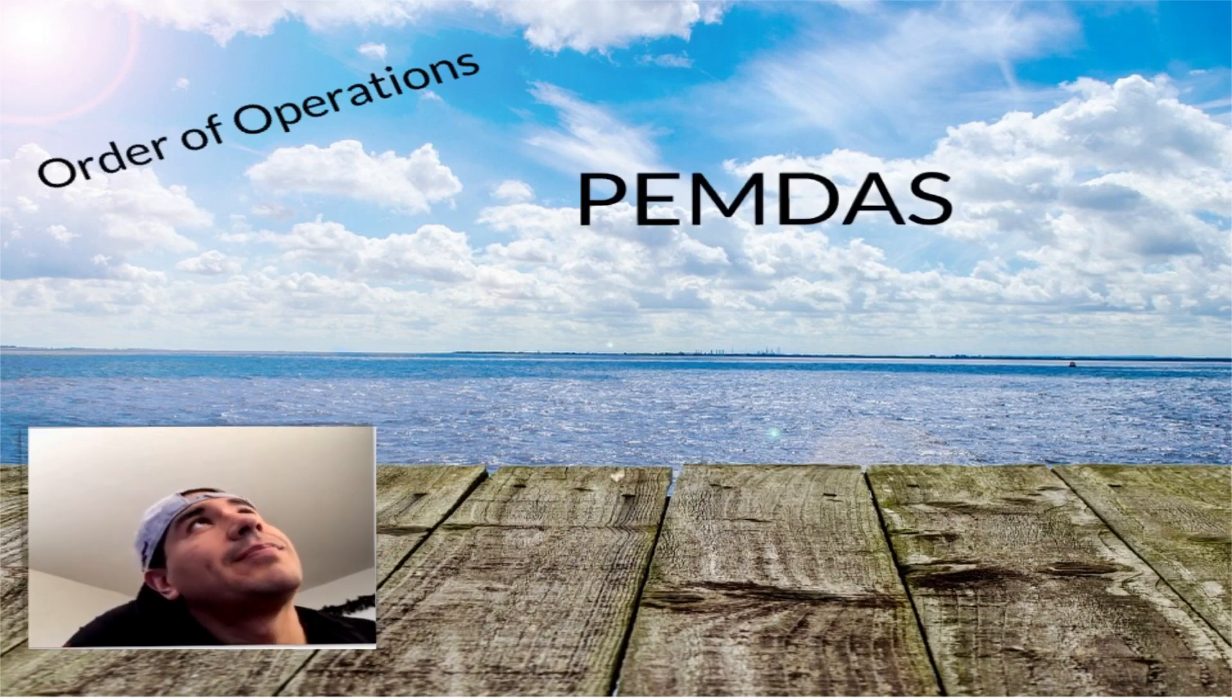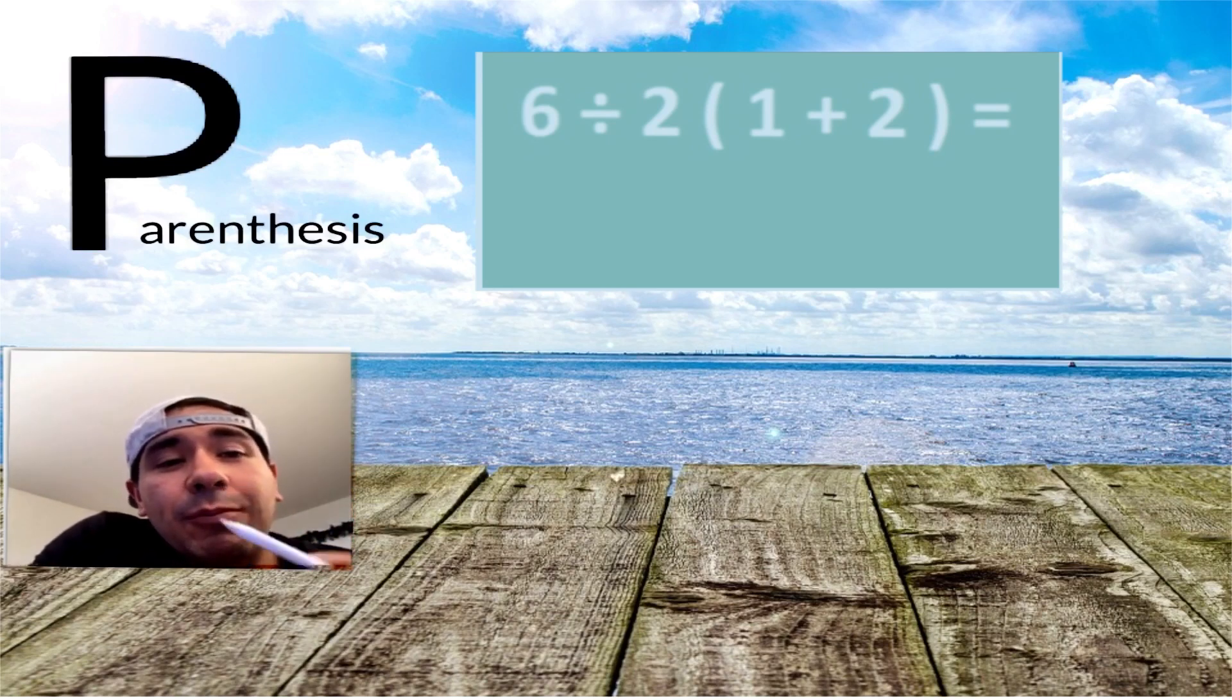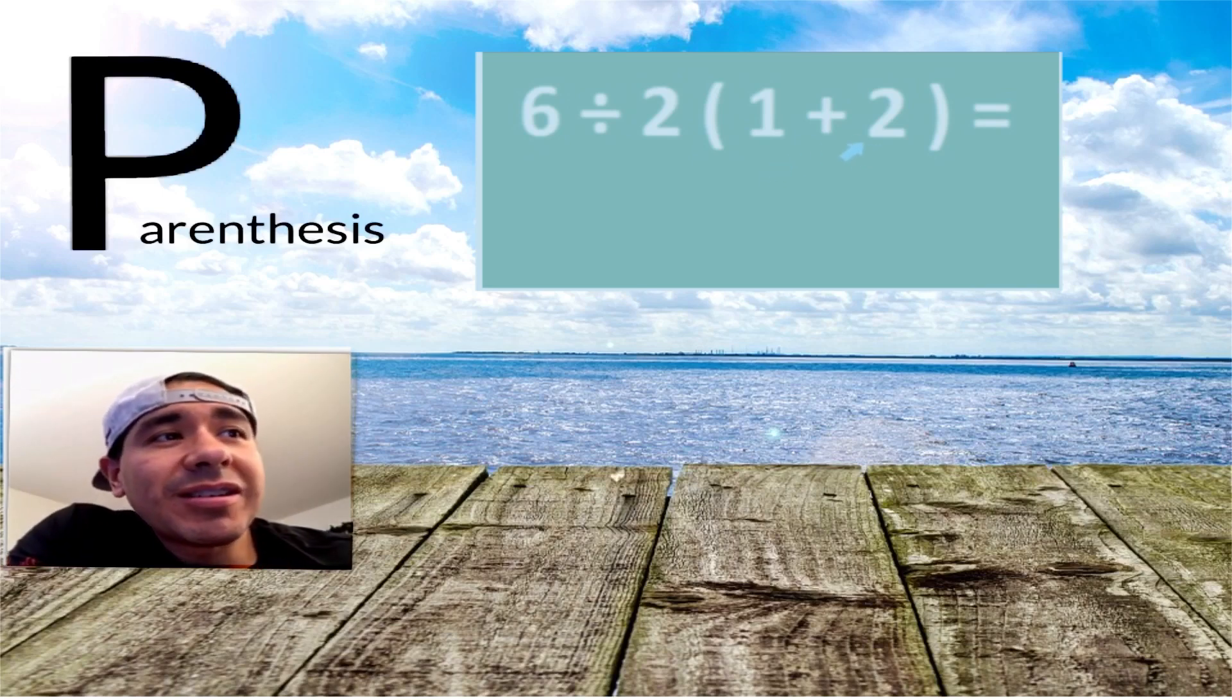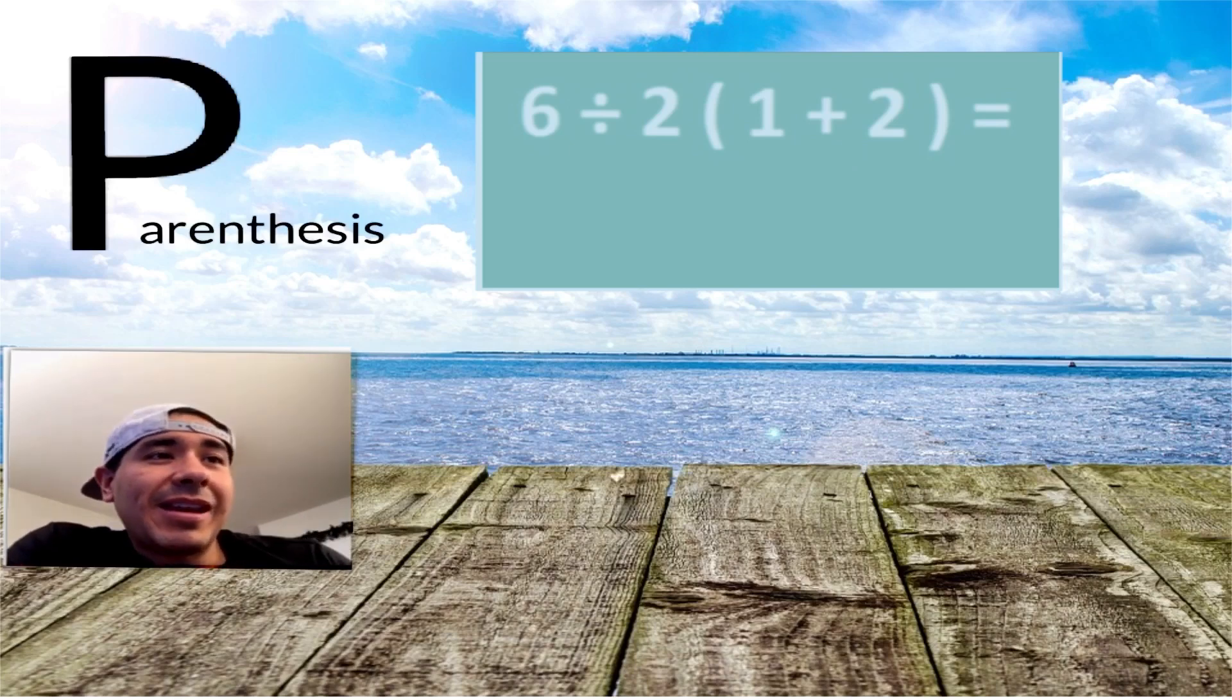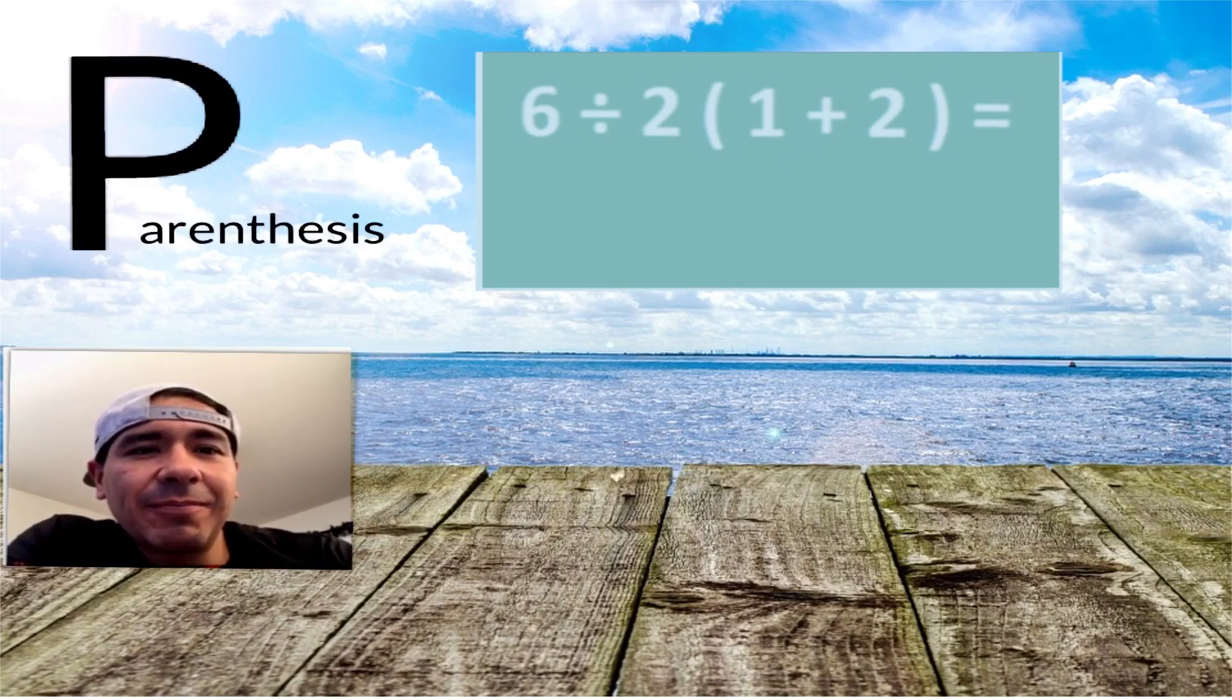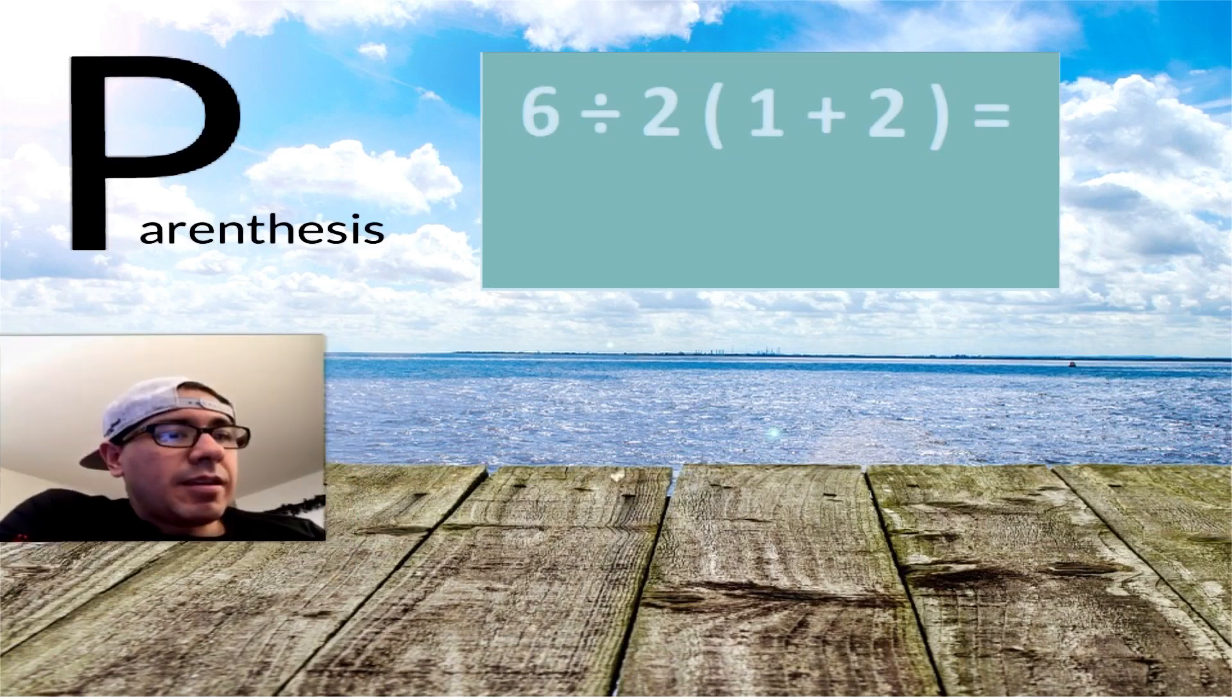Let's start with the P. P represents the parentheses. We do the parentheses first, but we got to be careful. That doesn't mean everywhere you see parentheses that's where you operate. You look to see inside of our parentheses - do I have more than one number in here being operated on? See how we're adding the 1 plus the 2? We have more than one number and something's going on with these numbers. So according to our order of operations, we would do what's inside of these parentheses first.